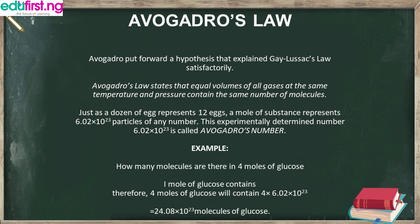The number 6.02 × 10²³ is called Avogadro's number; it is experimentally determined and does not change. For example: how many molecules are there in 4 moles of glucose? According to Avogadro's Law, 1 mole contains 6.02 × 10²³ molecules. So 4 moles = 4 × 6.02 × 10²³ = 24.08 × 10²³ molecules.